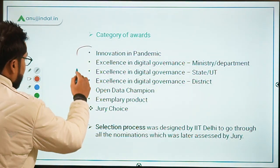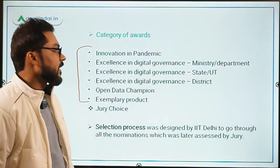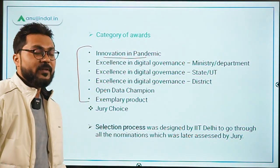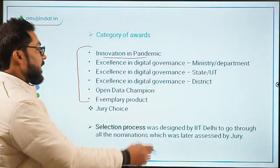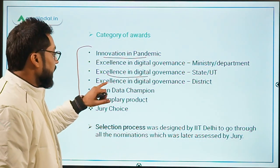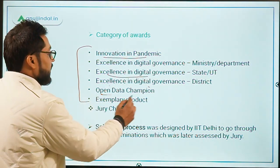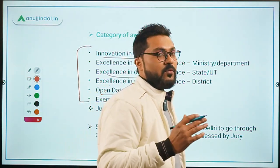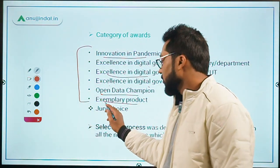There are 6 categories of these awards: Innovation in Pandemic, Excellence in Digital Governance to a Ministry or Department, Excellence in Digital Governance to a State or UT, Excellence in Digital Governance to a District, Open Data Champion, and Exemplary Product. There is one more optional category — Jury Choice — which may or may not be present in a given year.